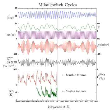In about 13,000 years, the North Pole will be tilted toward the Sun when the Earth is at perihelion. Axial tilt and orbital eccentricity will both contribute their maximum increase in solar radiation during the Northern Hemisphere's summer.